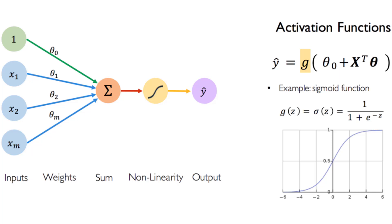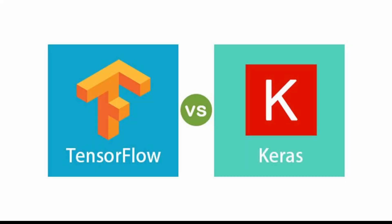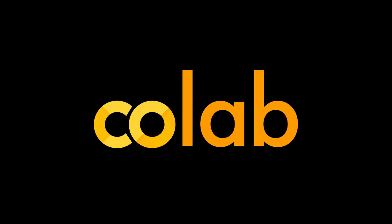Hello everyone, Assalamu alaikum, this is Shaqeel. Welcome to the Deep Learning and Artificial Neural Network video series. Today in this particular video we are going to learn what is Keras and what is the fundamental difference between Keras and TensorFlow. Then finally I will show you how you can install important libraries on Google Colaboratory. I have already said that all deep learning projects will be shown in Google Colab, so I will show you how to install these things.